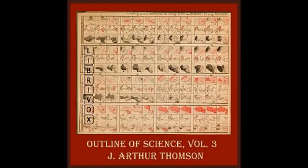Another aspect of the balance of nature has to do with oxygen and carbon dioxide. Few people realize that the bulk of the oxygen in our atmosphere has been formed by green plants, which in the daylight are always splitting up carbonic acid gas and liberating oxygen into the air. This oxygen is used by animals and by plants as well, for keeping up the oxidation or combustion of carbon compounds which living always implies.